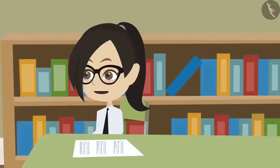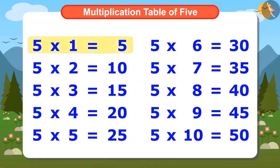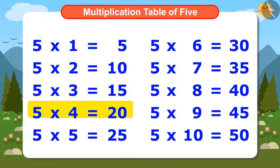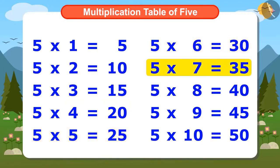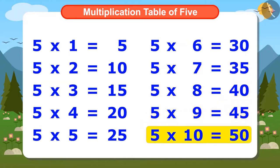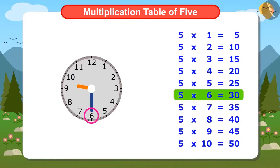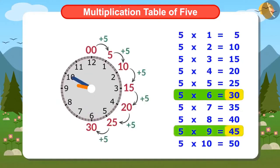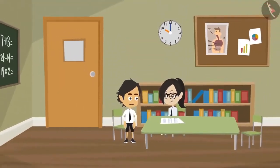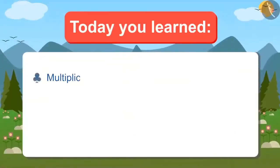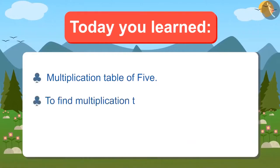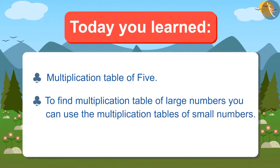Now I will try to memorize the multiplication table of 5 by reciting it: 5 ones are 5, 5 twos are 10, 5 threes are 15, 5 fours are 20, 5 fives are 25, 5 sixes are 30, 5 sevens are 35, 5 eights are 40, 5 nines are 45, 5 tens are 50. Now look at the clock. When the minute hand is at 6, reading the multiplication table of 5 till 6 will tell that it is 30 minutes. And when it's on 9, it will be 45 minutes. Yes, this is the right way to read time.